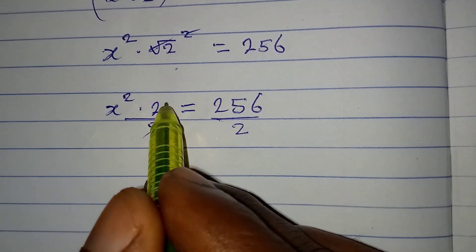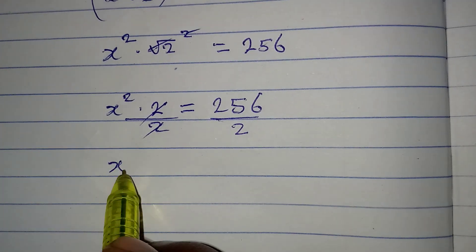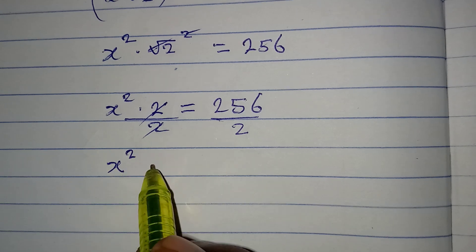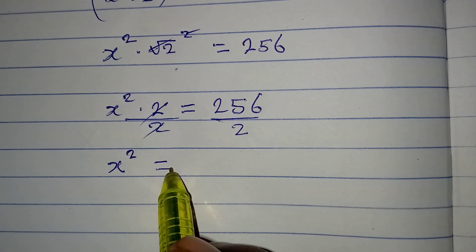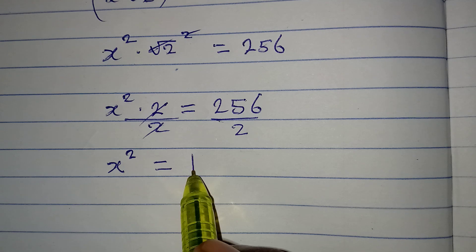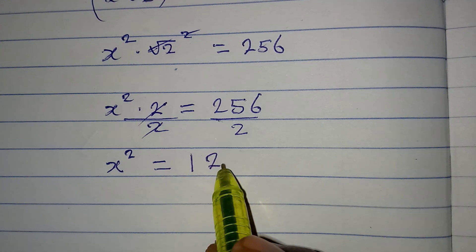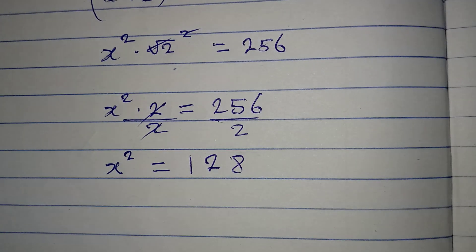Now divide both sides by 2 — divide this by 2 — this is going to cancel, and then x squared is simply equal to 128.